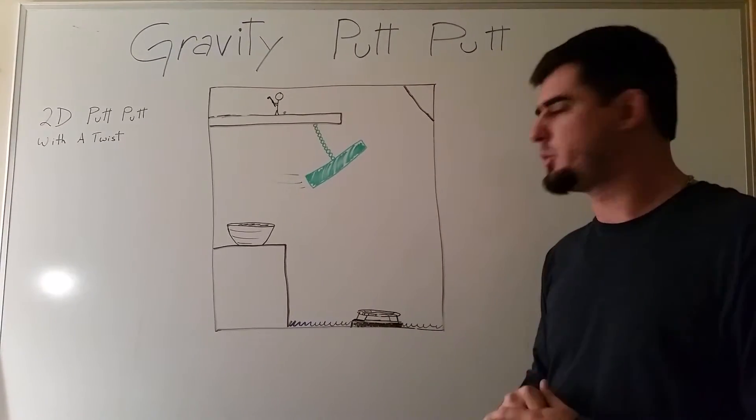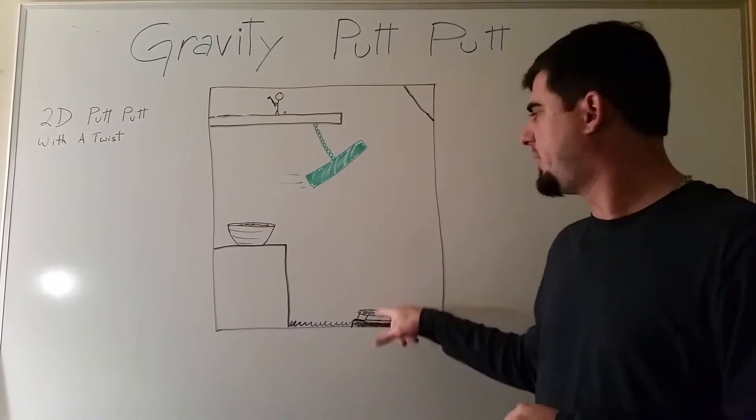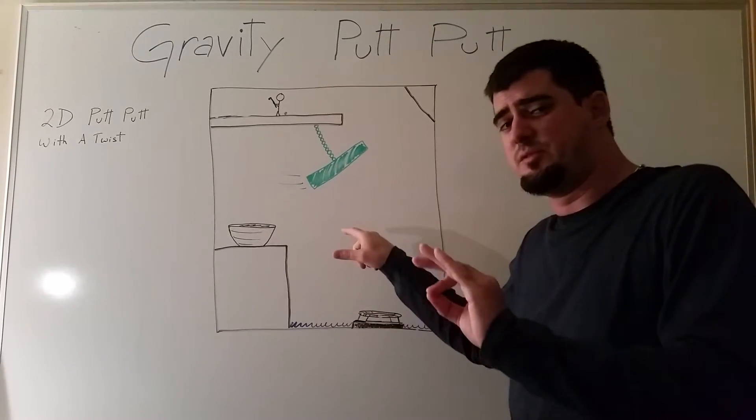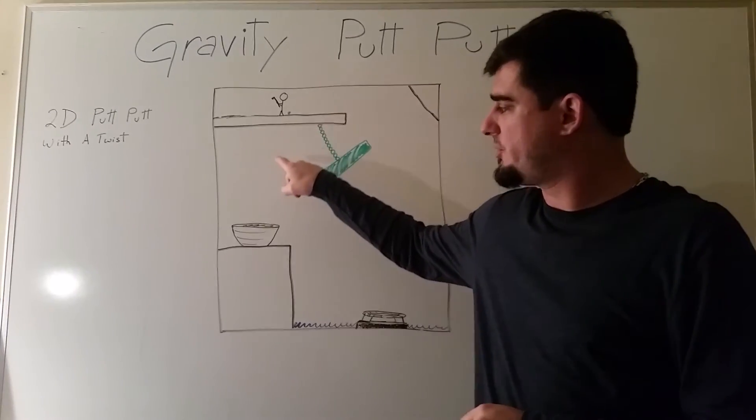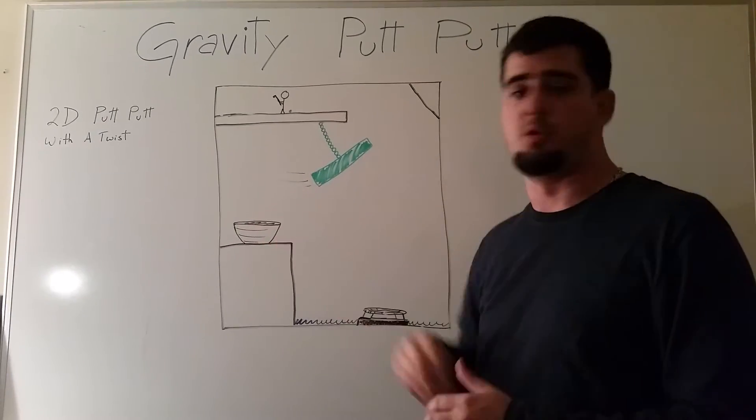If we do hit the trampoline just right with just enough force, the ball's going to go up, and if we miss the swinging block, it's going to go up in the air, and then gravity's going to start putting it back down, and it's going to go in the bowl.